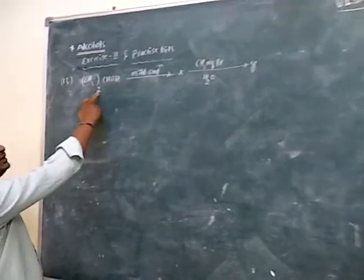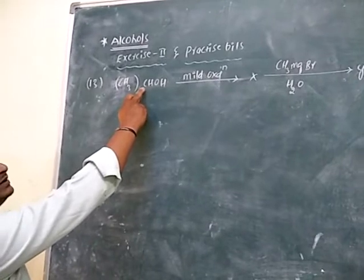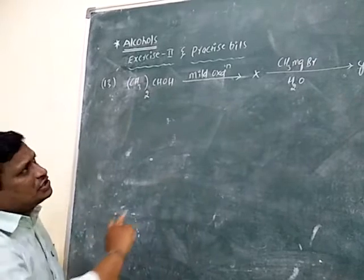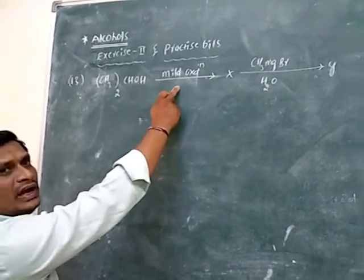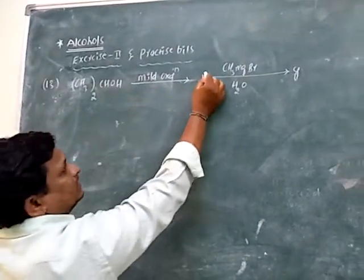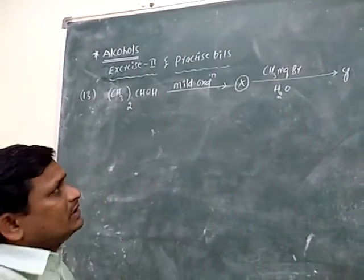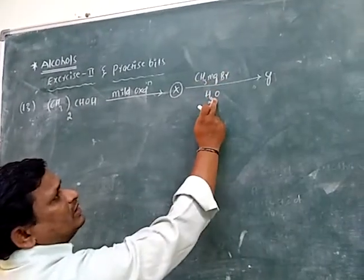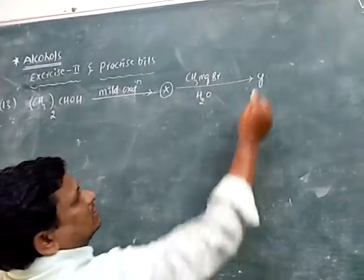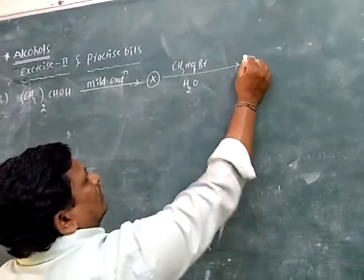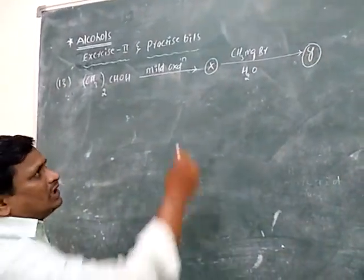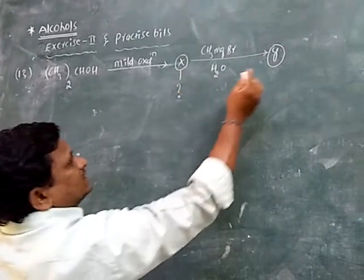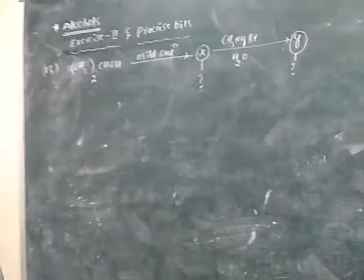Generally, it is a secondary alcohol, CH3CHOH. It is involved in a mild oxidation reaction and gives compound X. The obtained X is then treated with methyl magnesium bromide in the presence of H2O, which gives compound Y. What are X and Y in this reaction?